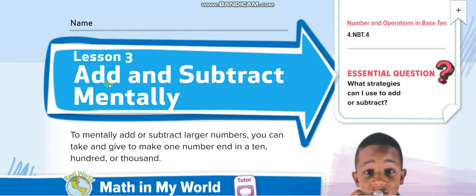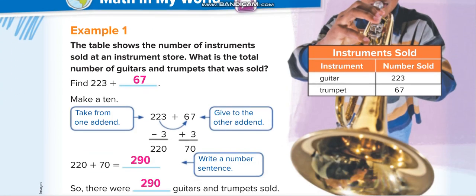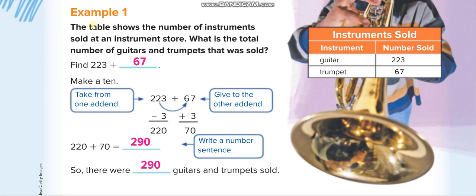As the name of the lesson makes clear, we have to add and subtract mentally — in our mind. In this first question, the table shows the number of instruments sold at an instrument store. What is the total number of guitars and trumpets sold? Guitars: 223, Trumpets: 67.